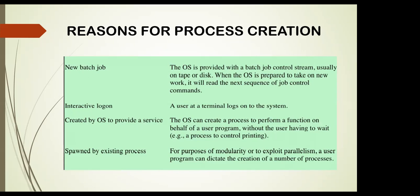Reasons for process creation: new batch job — the OS is provided with a batch job control stream, usually on tape or disk, and when ready will read the next sequence of job control commands. Interactive log — a user logs onto the system and the OS creates a process to provide service. The OS can also create a process to perform a function on behalf of a user program. For modularity or to exploit parallelism, a user program can dictate the creation of a number of processes.